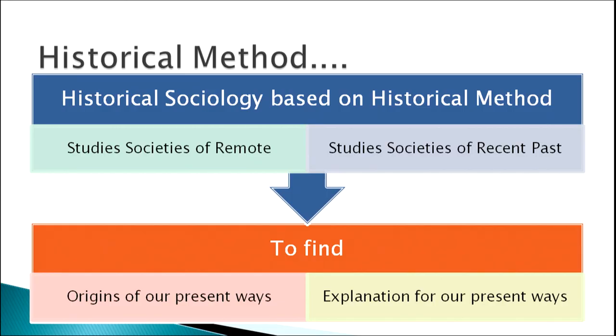Historical sociology is based on the historical method and it studies the societies of the remote and recent past. We study this remote and recent past history to find the origin of our present ways and explanation for our present ways — what we are doing and how we are living in the present is deeply rooted in the past history.